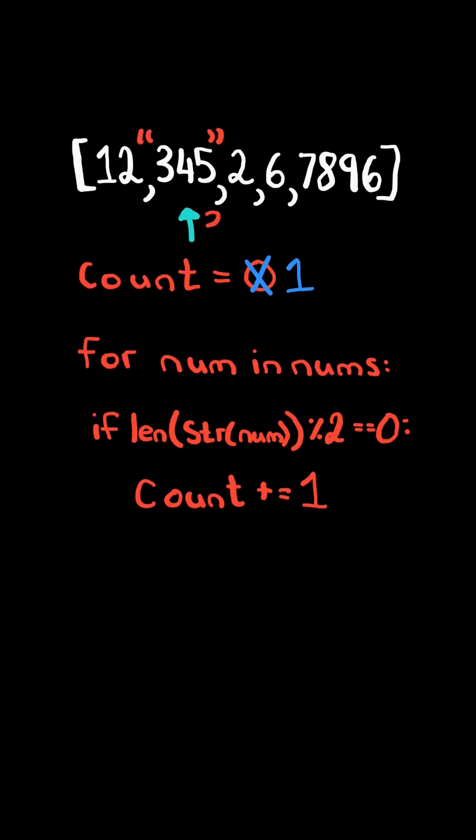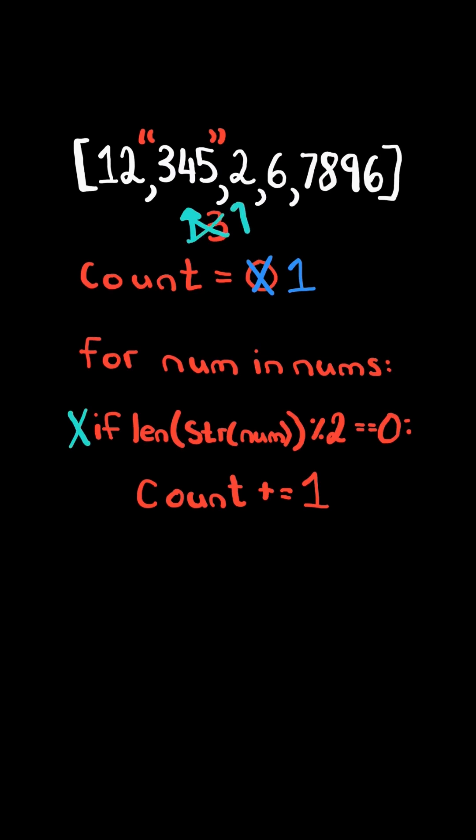And we continue. Now the count of digits is three, and it is not even. So we skip it and continue.